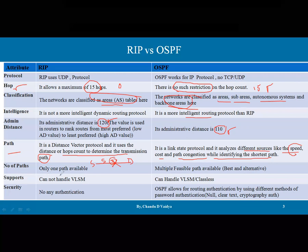In terms of number of paths, in RIP only one path is available — there is no alternative path. In OSPF, multiple feasible paths are available: the best path is stored in the routing table, and the alternative path is stored in the topological table.